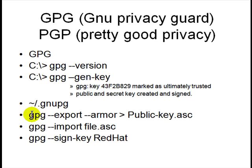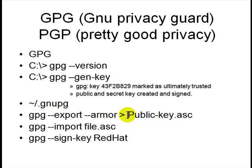The next command you can use is 'gpg --export --armor'. GPG is going to look at your generated, ultimately trusted key and put it in ASCII format using the armor option, then save it — redirected to a file like 'publickey.asc'. If somebody sends you their ASCII file, you can import it with 'gpg --import'. You can even sign a key using the 'sign-key' option, for example signing the key for Red Hat.